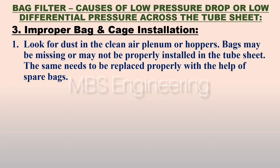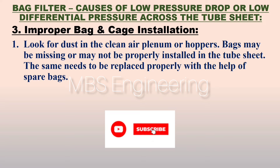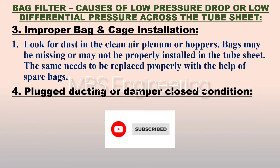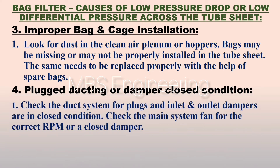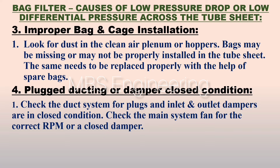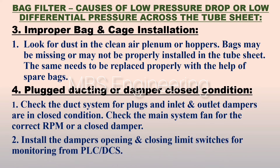One of the main causes of low differential pressure is improper bag and cage installation. Point number 1: look for dust in the clean air plenum or hoppers. Bags may be missing or may not be properly installed in the tube sheet. These need to be replaced properly using spare bags.